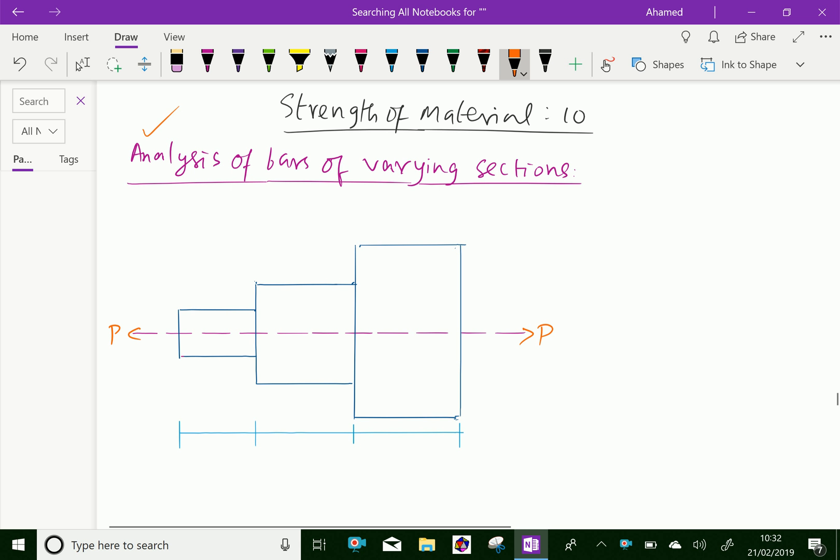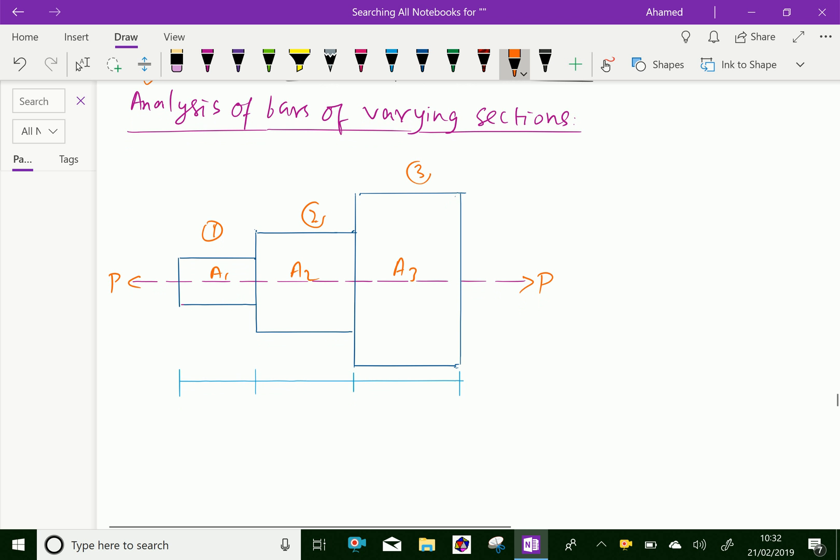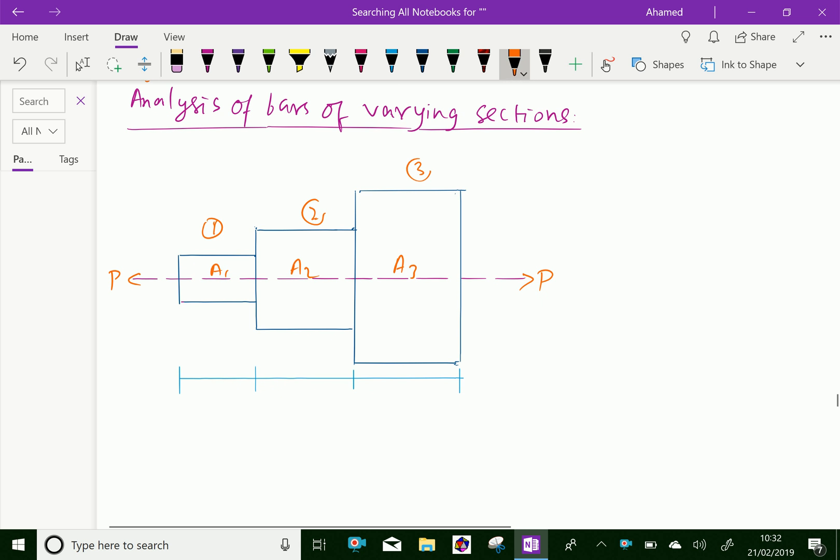Now, let the cross-section of section 1 be A1, this is section 2 with A2, and this is A3. The lengths of those sections are L1, L2, and L3.